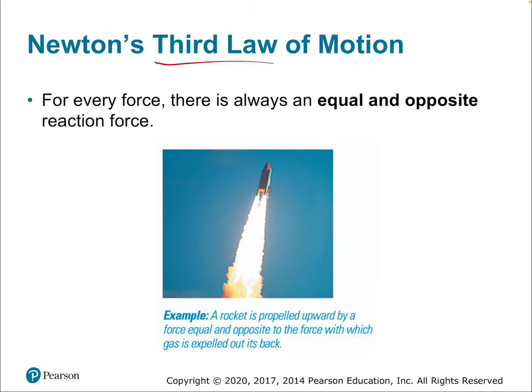Newton's third law of motion says that for every force, there is always an equal and opposite reaction force. People like to say 'for every action there's a reaction,' but what you should be saying is 'for every action there's an equal and opposite reaction.' The 'opposite' part means direction. So if I push with one force this way — this is the force of pushing — then there is going to be an equal and opposite force pushing back. This applies to every single situation. There is no force in the universe that doesn't have another reaction force.